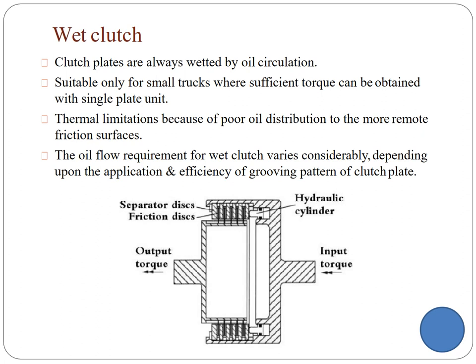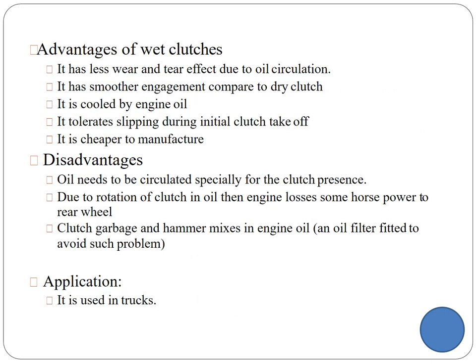Wet clutch: wet clutches are always wetted by oil circulation, suitable for small trucks where sufficient torque can be obtained with a single plate. Thermal limitations apply over the frictional surfaces because oil distribution may be poor. Oil flow requirements vary depending on the application and the grooving pattern of the clutch plate. Advantages: less wear due to oil use, smooth operation compared to dry clutch, cooled by engine oil, tolerates slipping during initial clutch takeoff, and cheaper to manufacture. Disadvantage: oil needs to be continuously circulated, which can cause horsepower losses. Used in truck applications.